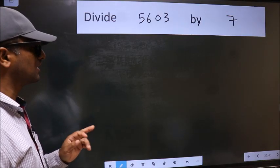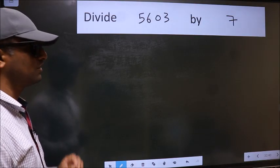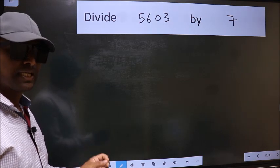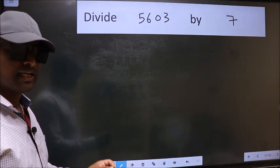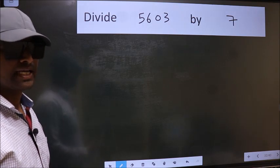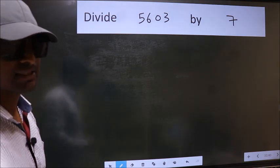Divide 5603 by 7. While doing this division, many do this mistake. What is the mistake that they do? I will let you know. But before that, we should frame it in this way.